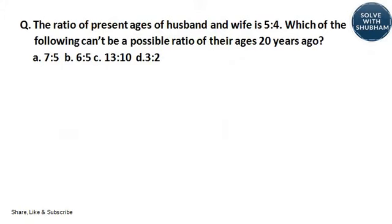The first question goes like: the ratio of present ages of husband and wife is 5 is to 4. Which of the following cannot be a possible ratio of their ages 20 years ago? We have been given 4 options. When you look at the question, you clearly see it says 'which of the following' — it means we have to look at the options and determine which is not possible. We will try doing this question by two methods.